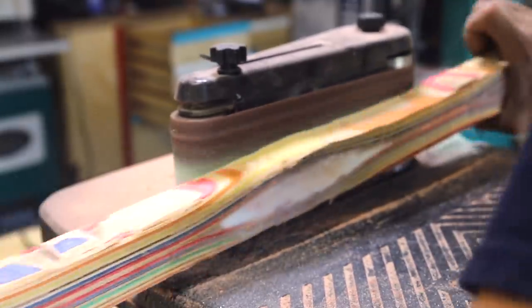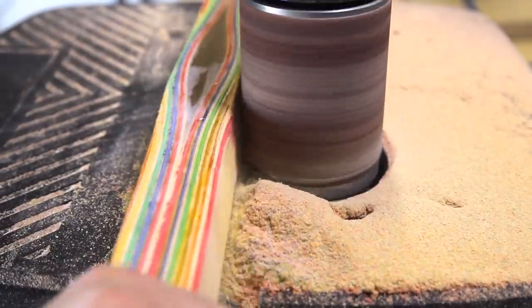This oscillating sander is the best tool for shaping the handle and rounding over the edges, but man, it creates a ton of dust.